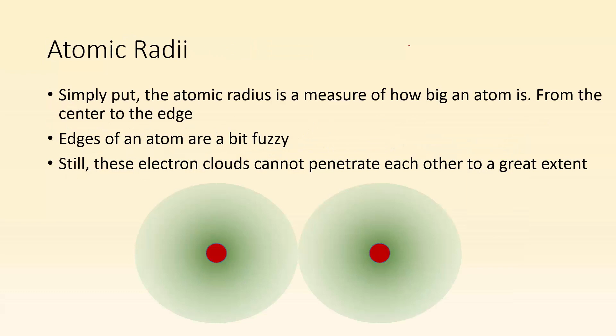So atomic radii, what does that even mean? Simply put, the atomic radius is a measure of how big an atom is from the center to the edge. Think of this as a circle, going from the center to the edge. Now edges of an atom are a bit fuzzy because of the whole quantum thing going on. These electrons aren't orbiting like a planet, they're more like electron clouds. Still, these electron clouds cannot penetrate each other to any great extent.